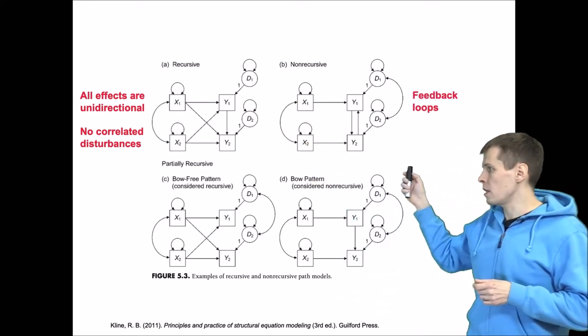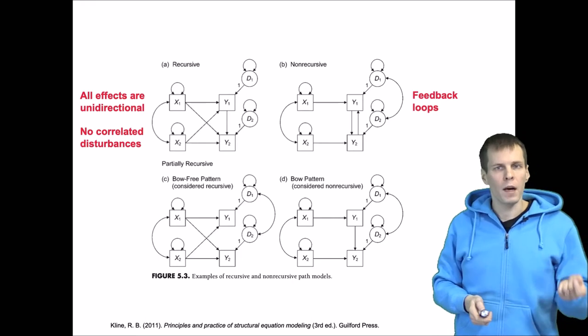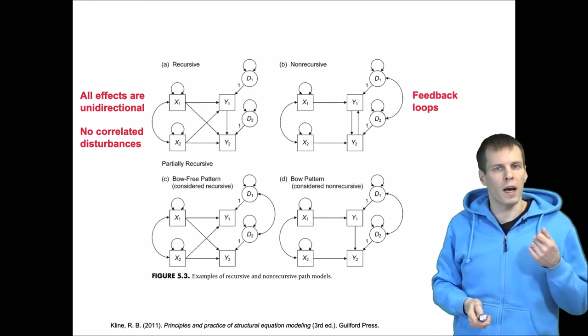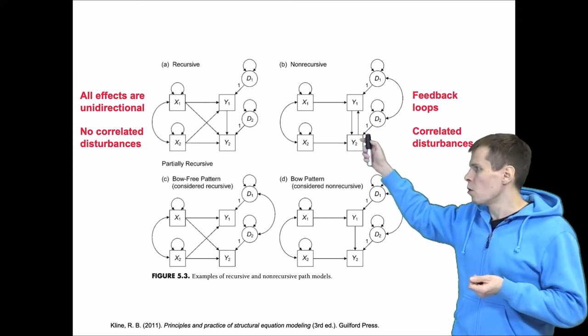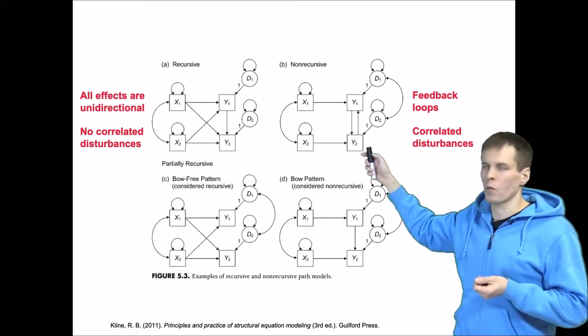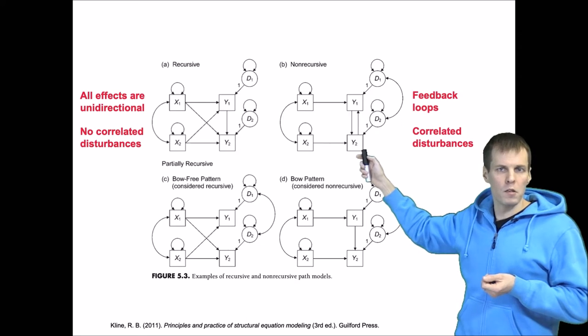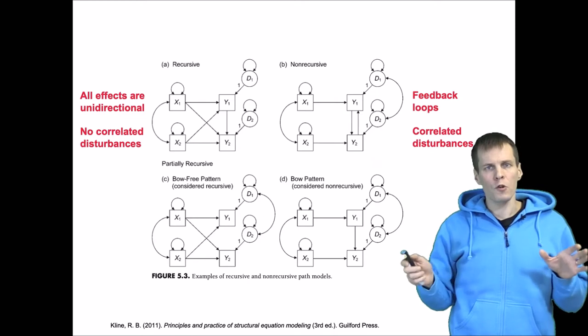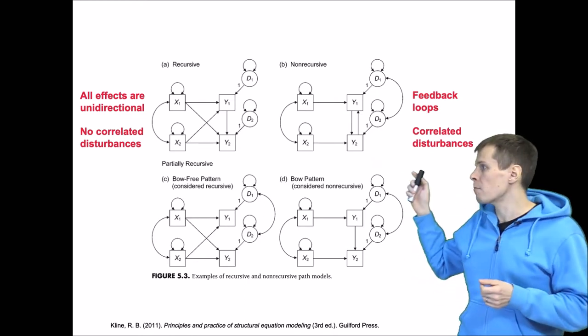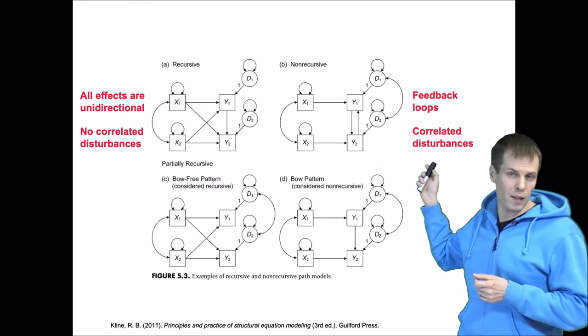In non-recursive models, we have feedback loops and correlated disturbances. The feedback loop is here: Y1 influences Y2 and Y2 influences Y1 back. This is some kind of equilibrium model. These are two extremes where we have both a feedback loop and correlated disturbances.